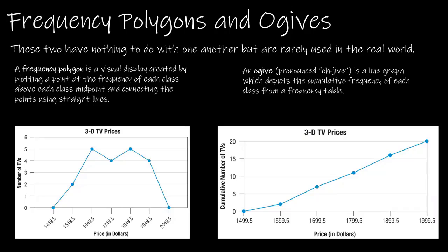I added two different displays to this slide because honestly, they're not things that you're going to see very often. We have a frequency polygon and an ogive. A frequency polygon is essentially graphing the midpoint and connecting the midpoint of each class with straight lines. And an ogive is a line graph that depicts the cumulative frequency up to the total value of n, which in this case was 20. You're probably not going to see these very often, so I didn't want to spend any time on them.